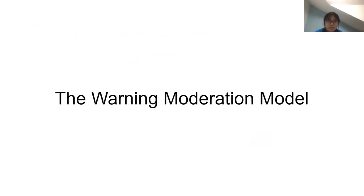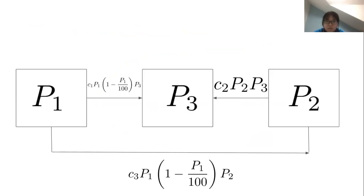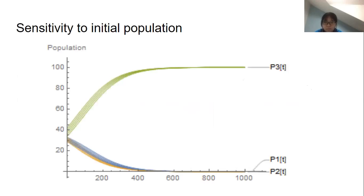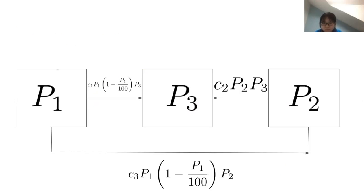The second moderation technique that we investigated was warning moderation. We used a very similar model to censorship except we have this additional factor on P1 transitions, so like P1 to P3 or P1 to P2, that is a factor of 1 minus P1 over 100. This is to keep the population of P1 from exploding or being so extreme.